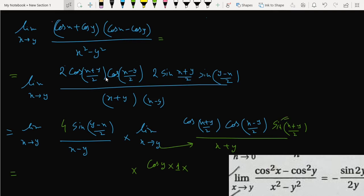Sine: in place of x we write y. Y plus y means 2y, 2y by 2, that is sine y. In the denominator we find y plus y, that is 2y. So 4 is out from the limit.